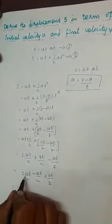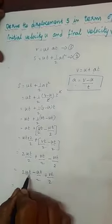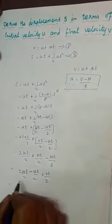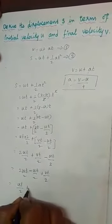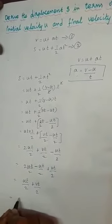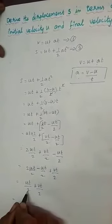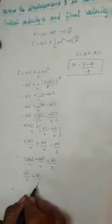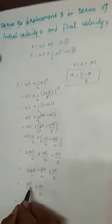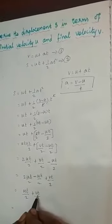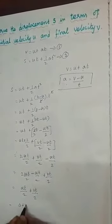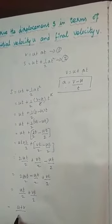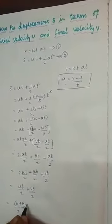So, here 2 U T minus U T by 2 minus U T by 2 becomes 2 U T by 2 plus V T by 2. We are taking 1 by 2 commonly out, and T is also common. So, that gives us U plus V divided by 2 into T.